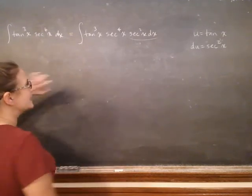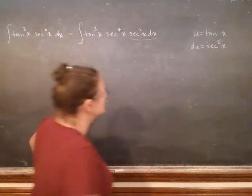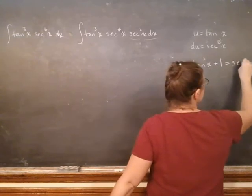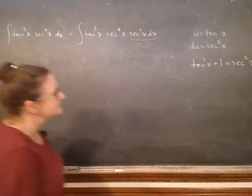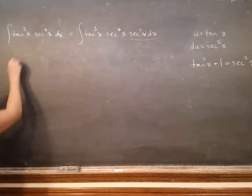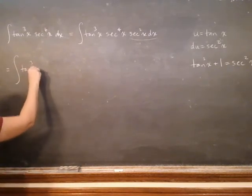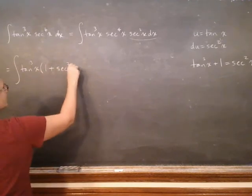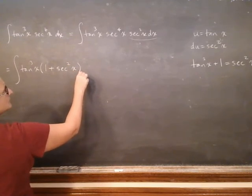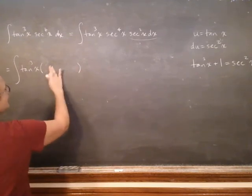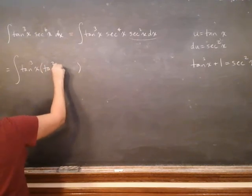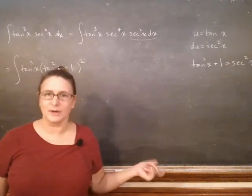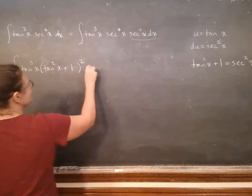So because my u is tangent, I want to change all the secants to tangents to make my life easier. That's going to give me tangent cubed, and then 1 plus tangent squared x squared, because secant to the fourth is secant squared squared. And then I'm just going to leave this guy here.